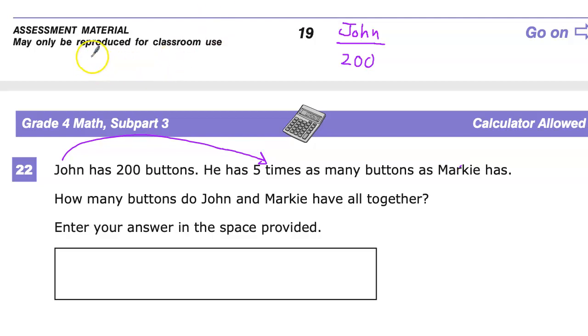If we have Markie's buttons and five times that amount is equal to 200, we need to figure out how many buttons Markie has.